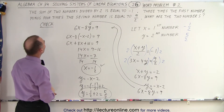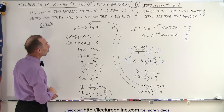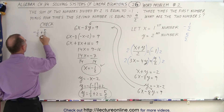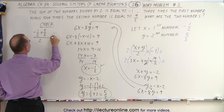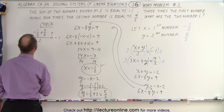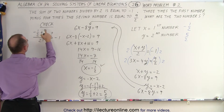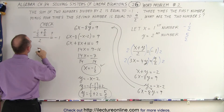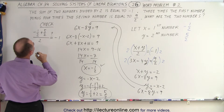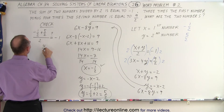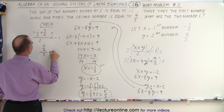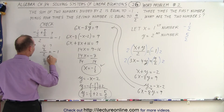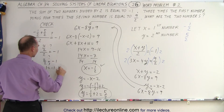The sum of the two numbers divided by 2 should equal negative 1. So negative one half plus 5 over 2 divided by 2 should equal negative 1. Negative one half plus 5 over 2 is 4 halves, which is 2, divided by 2 gives 1. But we get 1 equals negative 1, which is not true.